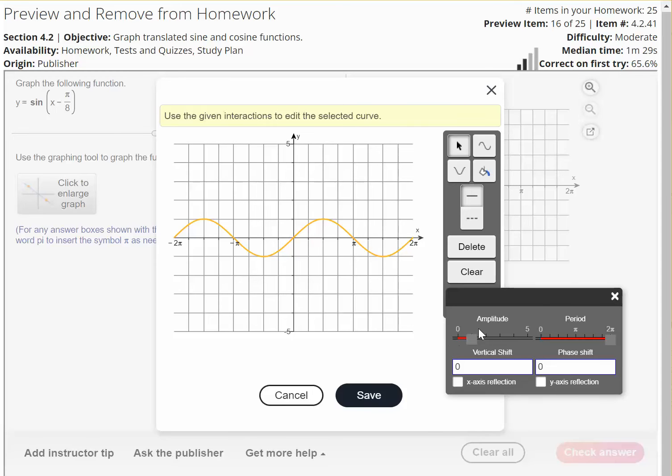And so notice the amplitude for this one here is going to be 1, because there's a 1 for A. In other words, in front of sine, there's a 1. The period is 2 pi, because there's no number in front of x here. The coefficient of x is 1.